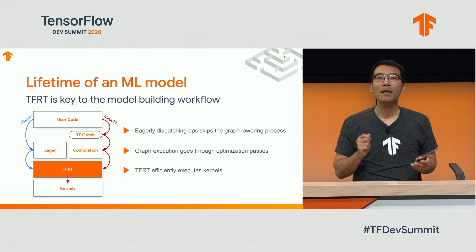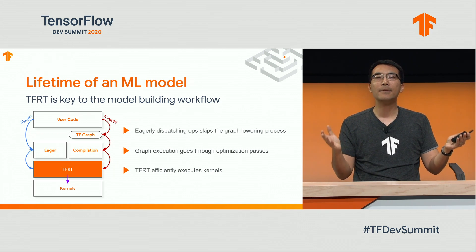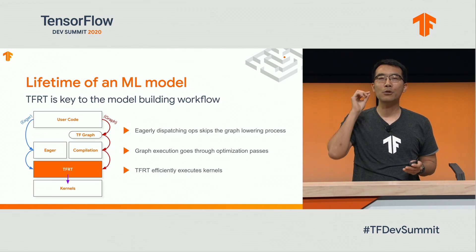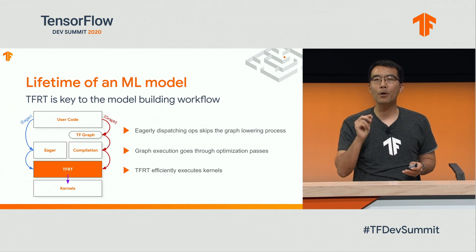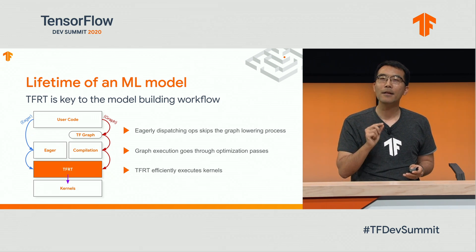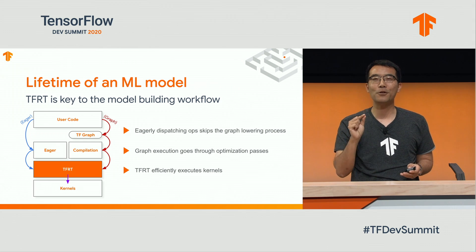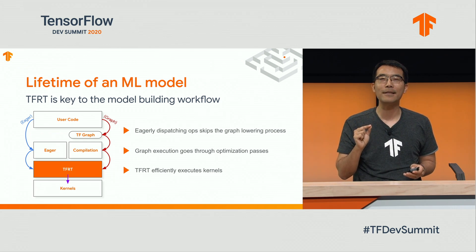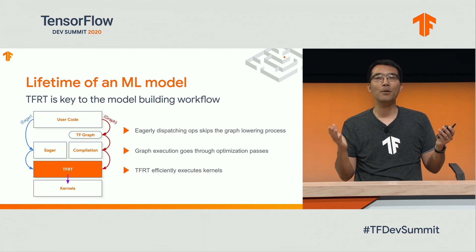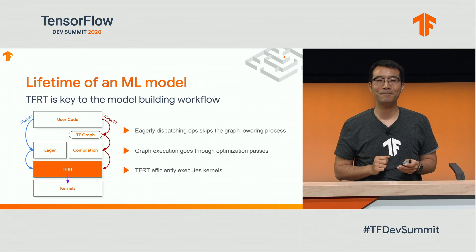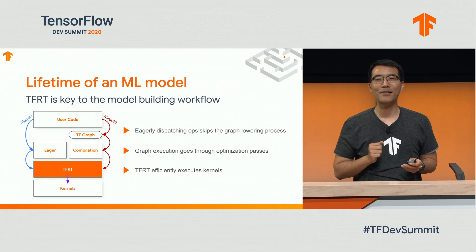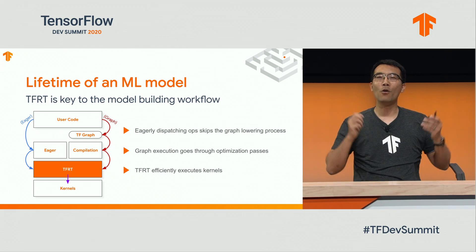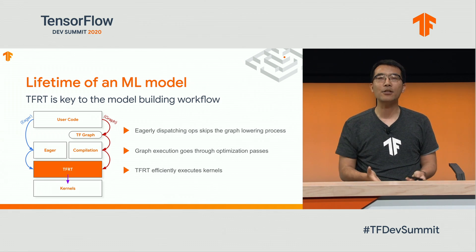Finally, in both execution paths, TFRT will call into a set of kernels to complete the model execution, as the purple arrow shows. The term kernel here refers to device-specific operations, like a GPU-based matrix multiplication. TFRT orchestrates the efficient kernel execution over a heterogeneous set of hardware.